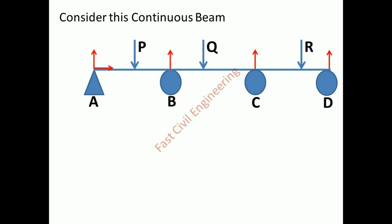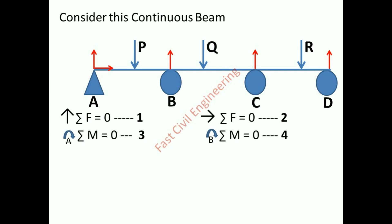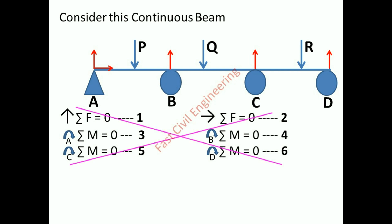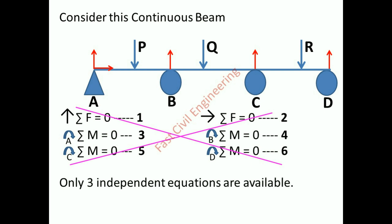Consider this continuous beam. Summation of vertical forces equals zero, summation of horizontal forces equals zero, summation of moment about A, B, C, and D each equal to zero — there are six equations available. But that is wrong: only three independent equations are there.